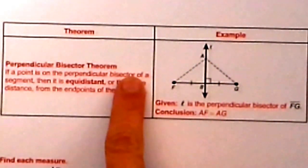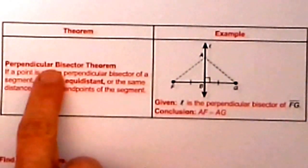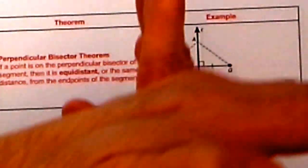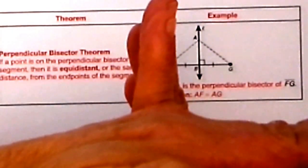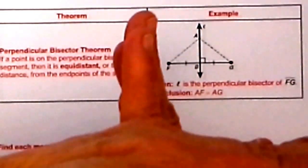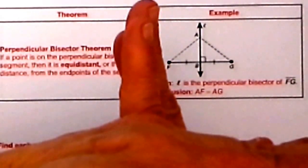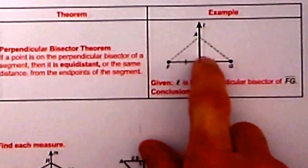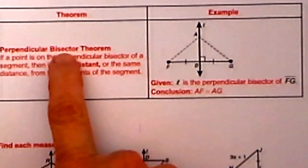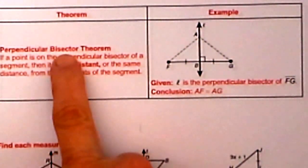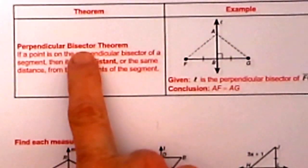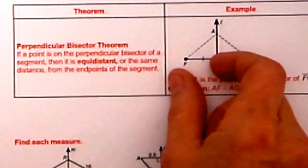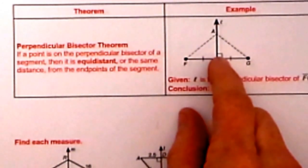What is a perpendicular bisector? Let's break it down. First of all, what is perpendicular? Perpendicular means you have a right angle — two lines that cross to form right angles. We also have a bisector, and a bisector means it cuts a segment into two equal parts right in the middle.